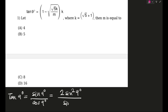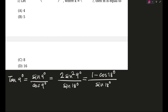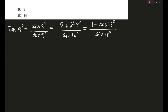So your denominator in this case will become sine 2θ, that is sine 18 degrees. And now we can write 2 sine squared 9 as 1 minus cos 18 degrees, whole divided by sine 18 degrees. 18 degrees is a standard angle for which we have learned the values of cosine and sine.